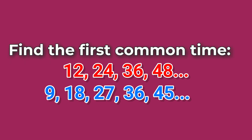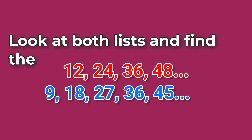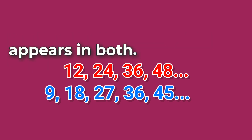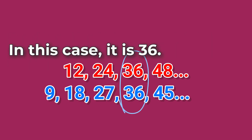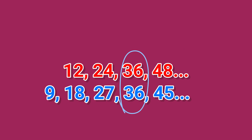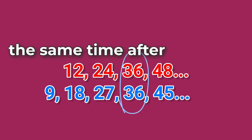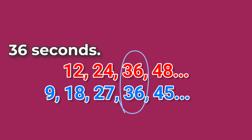Find the first common time. Look at both lists and find the smallest number that appears in both. In this case, it is 36. So both lights will blink at the same time after 36 seconds.